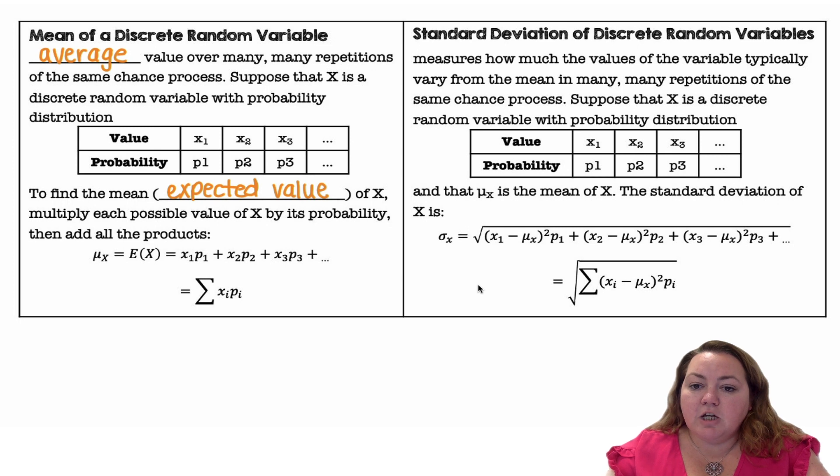The standard deviation of a discrete random variable measures how much the values of the variable typically vary from the mean in many, many repetitions of the same chance process. Suppose that x is a discrete random variable with the probability distribution shown below, and that μ of x is the mean of x. The standard deviation is the x value minus the mean squared times its probability plus the next x value minus the mean squared times its probability, and so on.